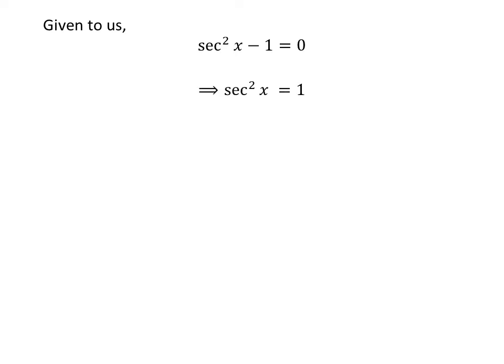Taking -1 to the right hand side gives us sec²x = 1. Taking the square root of both sides of the equation gives us sec x = ±1.